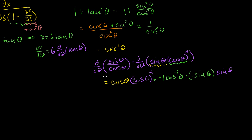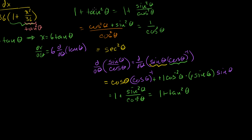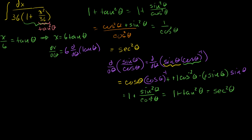So we get 1 plus sine squared of theta over cosine squared of theta, which equals 1 plus tangent squared of theta. And 1 plus tangent squared of theta equals secant squared of theta. So the derivative of tangent of theta is equal to secant squared of theta.